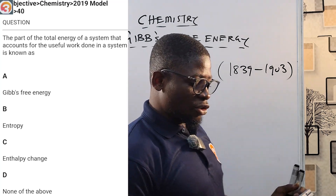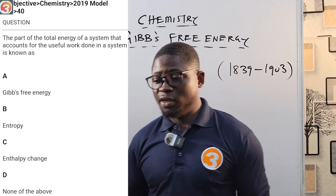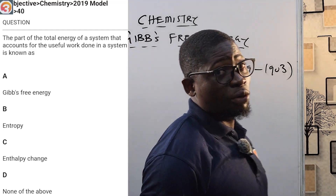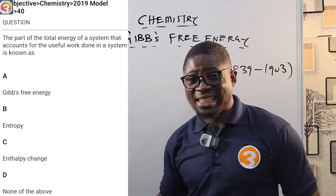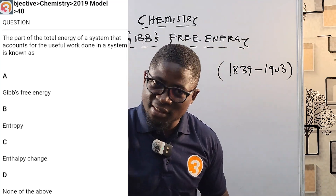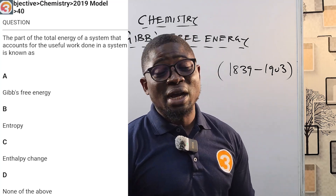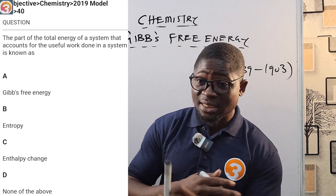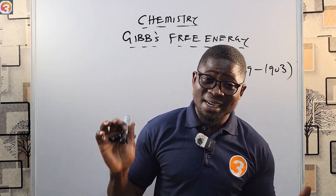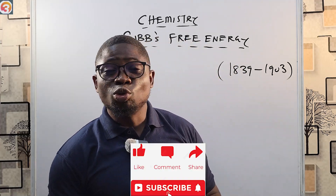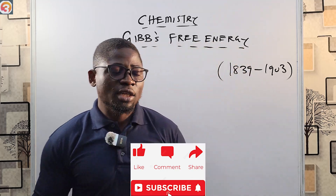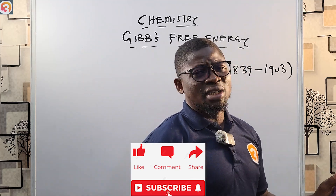The options are: A — Gibbs free energy, B — entropy, C — entropy change, and others. If you don't know the answer yet, don't worry — there are so many questions I'm going to treat after this class. I always make sure we do questions, so please be patient and stay to the end of this video.